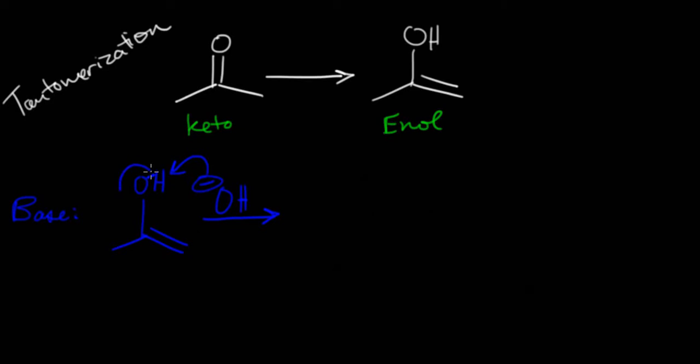And so we can draw our electrons moving to pull off that H. When they do that, the sigma bond between that O and the H will break and get flopped down to make a pi bond, which will throw electrons onto that carbon. And then we get this intermediate, and we now have water in solution.